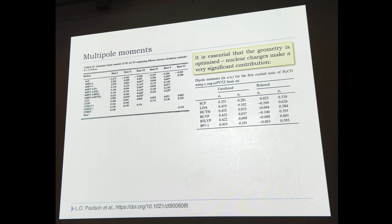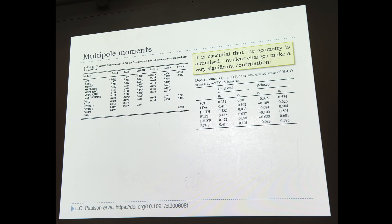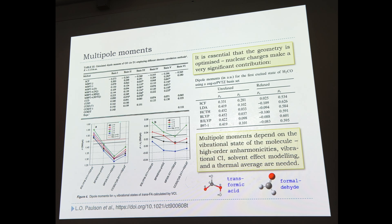Because these multipole moments include nuclear charges, they also depend on nuclear position and therefore the quality of the geometry optimization. If you are looking at the excited state of a particular molecule — like formaldehyde — it really matters whether we have kept the ground state geometry or re-optimized the excited state geometry. These are not energies, so the variational theorem does not apply, and a bigger basis does not necessarily guarantee a more accurate answer.